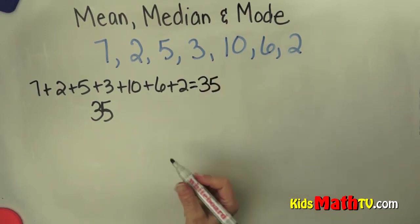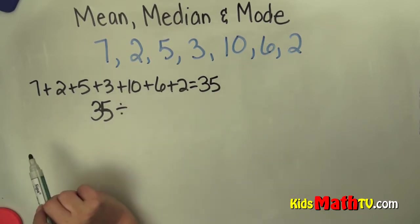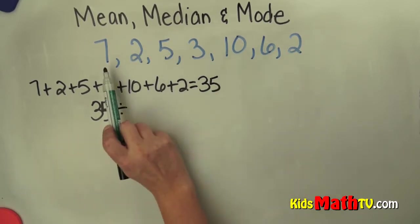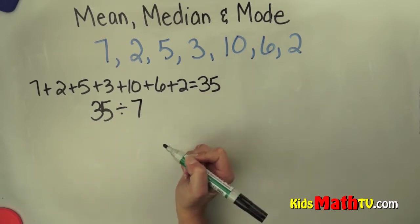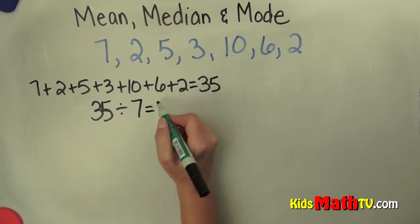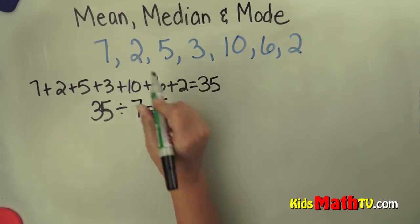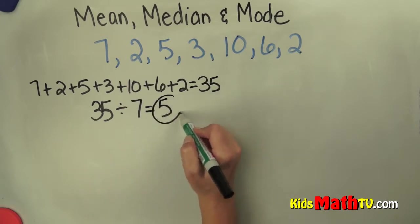Now I'm going to divide this number, 35, by the number of items in our set. I'll count them again: 1, 2, 3, 4, 5, 6, 7. So 35 divided by 7 equals 5. The mean of this set of numbers is 5.